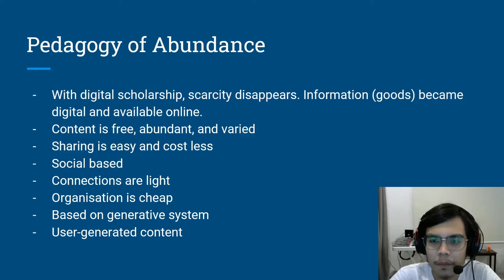Information became more available to people with its shift to a digital format. Information content for different scholastic purposes became free and abundant, mostly in part due to access to open journals. There was also a varied amount of content available for various disciplines. Because of the digital format of this information content, the sharing of these resources with others became easy as well as costless.